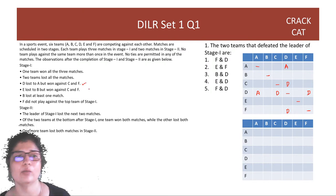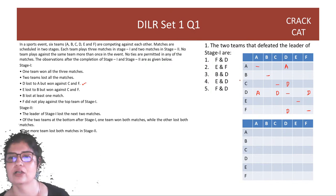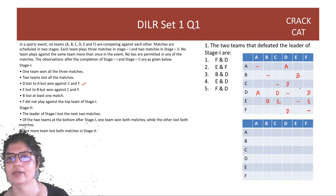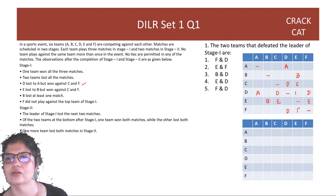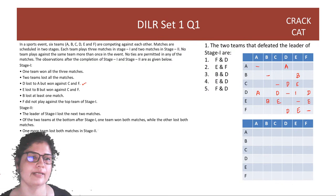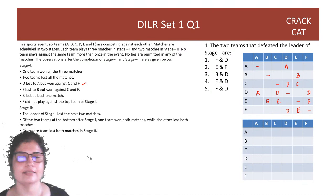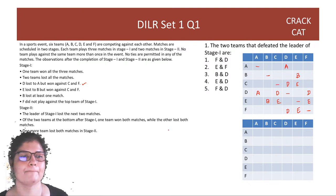E lost to B but won against C and F. So between E and B, B won. E is winning against C and F. Let me erase to avoid confusion — carry an eraser for your exam; it's better to rub things off than redraw.